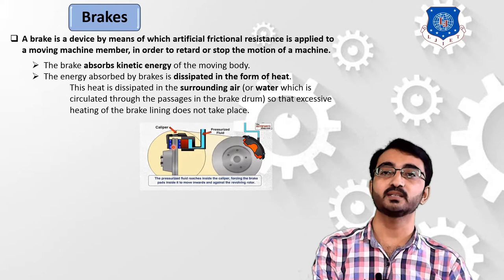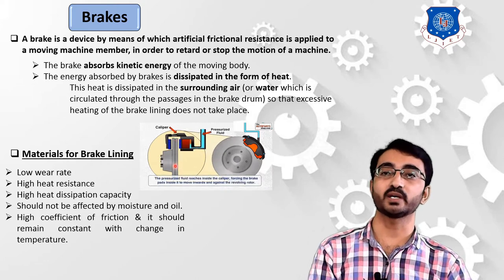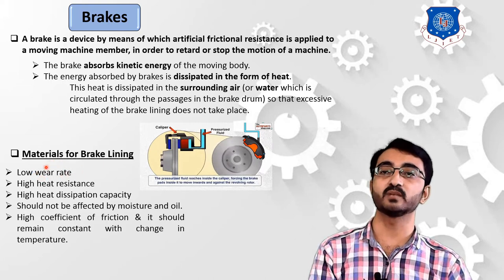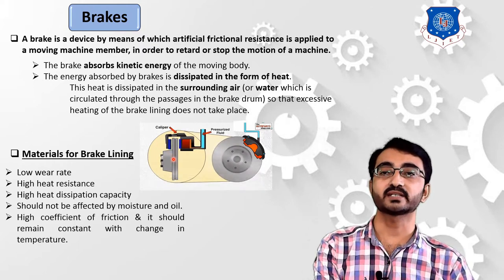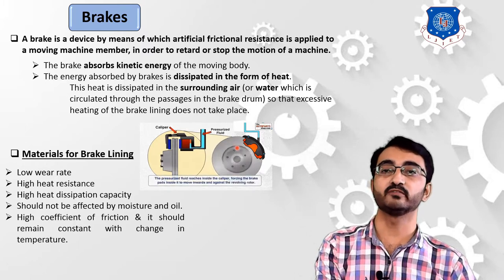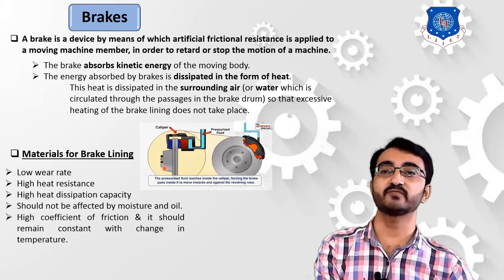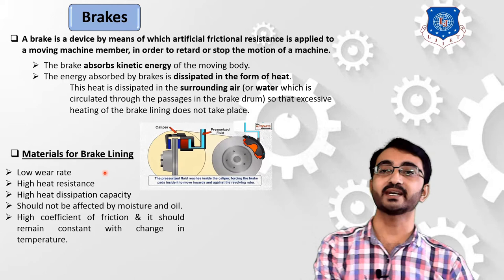Let's understand the properties required by brake linings. The first quality is low wear rate: when the brake lining is in contact with the rotating element, particles are removed from the surface, so this wear rate must be very low. Also, the strength of the brake material must be very low compared to the rotating element — that is, the drum or wheel — otherwise the wheel itself may wear out.